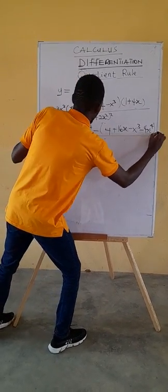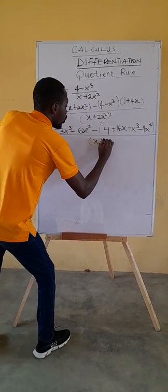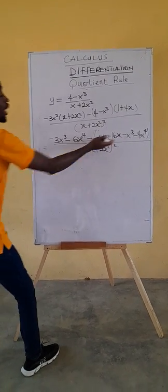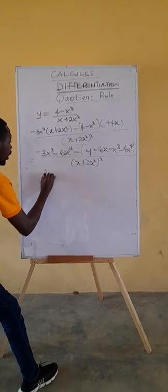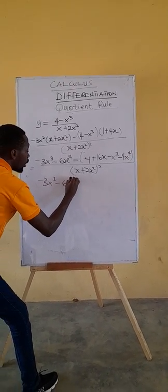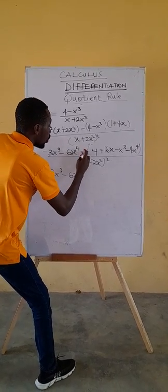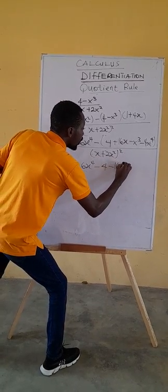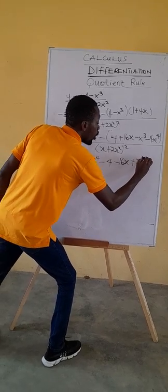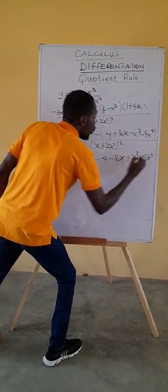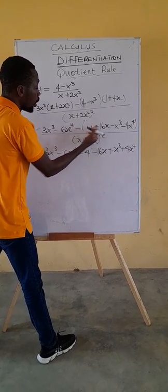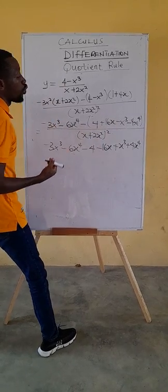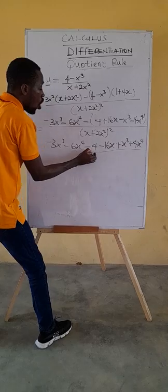Continuing to expand over (x plus 2x squared) squared: opening the bracket with the negative sign gives us minus 4, minus 16x, plus x cubed, plus 4x to the fourth. So the full numerator is: minus 3x cubed minus 6x to the fourth, minus 4, minus 16x, plus x cubed, plus 4x to the fourth.